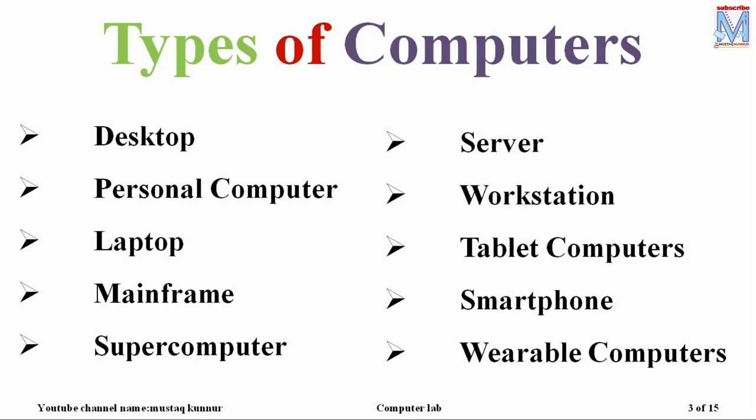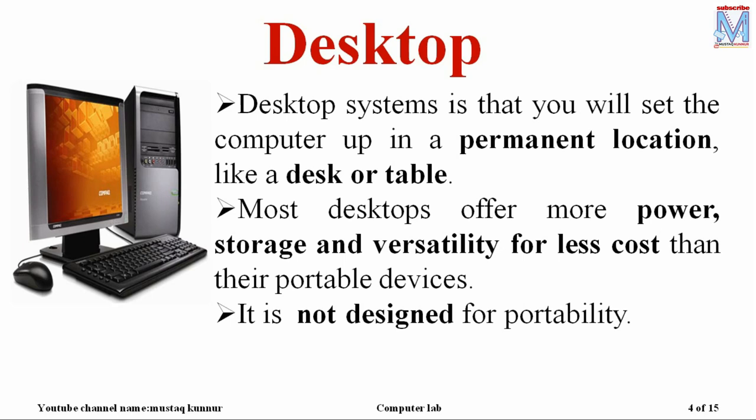We have different types of computers, namely: desktop personal computer, laptop, mainframe, supercomputer, servers, workstation, tablet computers, smartphone, and wearable computers. Desktop systems are permanently located at one place — they might be located at a desk or sometimes on a table.